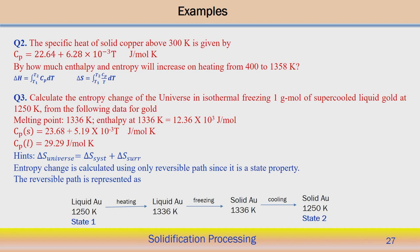Example 2: the specific heat of solid copper above 300 K is given by a particular expression, Cp as a function of temperature T with units of joules per mole. Be careful about the units given. We need to find by how much enthalpy and entropy will increase on heating copper from 400 to 1358 Kelvin.